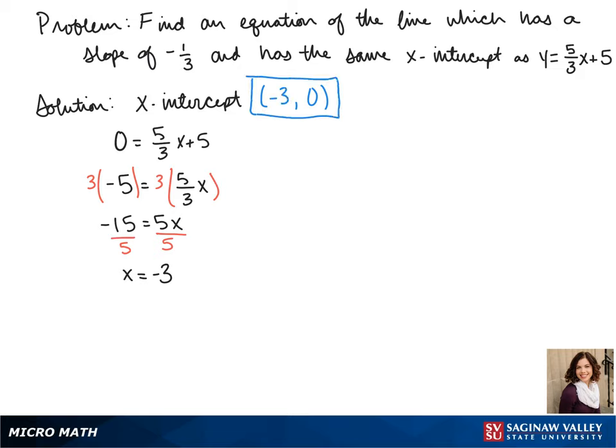So we have that. We know that our slope is negative one-third. So we can plug our point and our slope into our point-slope formula. We get y minus zero equals negative one-third times x plus three.